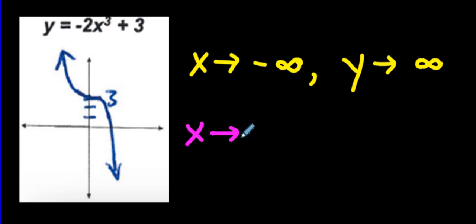This is just a backwards version of what we just had. As x approaches negative infinity, y approaches, what do you think? Well, it's going up forever, so it's positive. And as x approaches positive infinity, as we go to the right, the y values go down forever. Negative infinity and beyond.